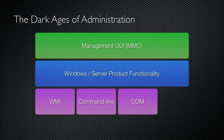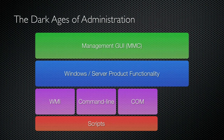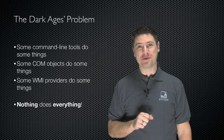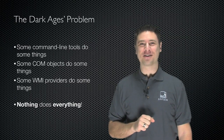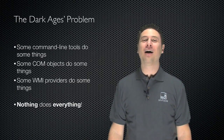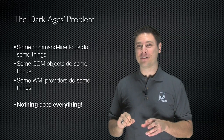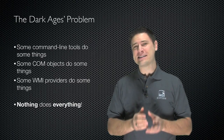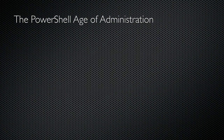That's the problem. They build the GUI first, and then build everything else on the side, because there's no real way to leverage the functionality embedded inside the GUI. So when we write scripts, we're left with limited functionality that's inconsistently implemented across products. It takes a lot of smarts to be effective, and you're left with a bunch of things you often just can't automate well. Some command-line tools do some things, some COM objects do some things, and some WMI providers do some things — and not every tool can do everything we need.